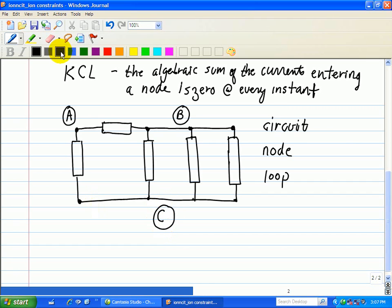Now let's discuss loops. A loop is a closed path formed by tracing through an ordered sequence of nodes without passing through any node more than once. Here's a path. Here's another one. And another one. We have one more—the outer loop. So we have a total of four loops in this circuit and three nodes.